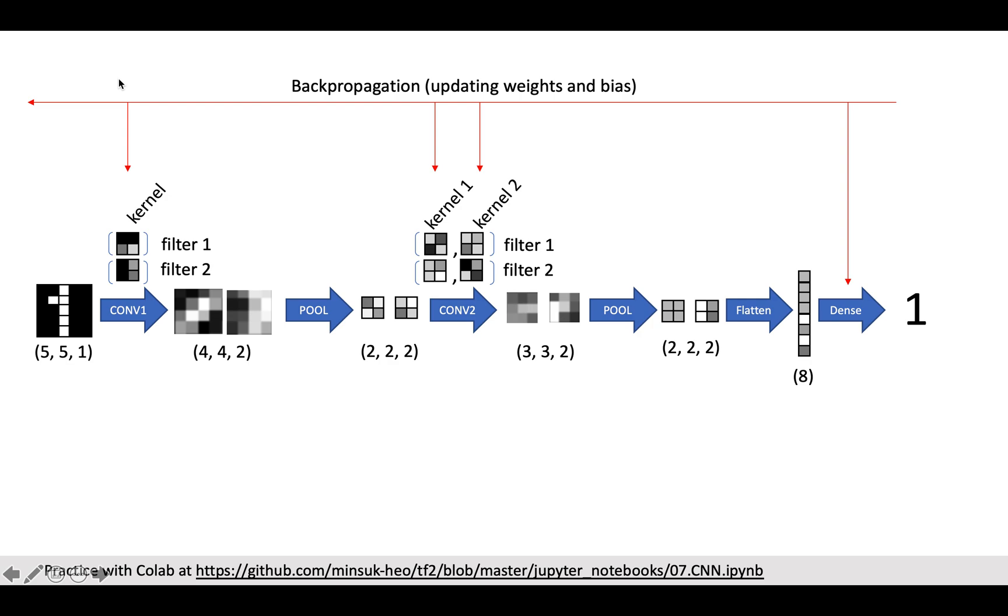And there will be backpropagation for updating weights and bias. Well, the initial value of filter is just random, so we don't know what kind of feature will be detected by the filters we made at the beginning point we make this deep learning model. In this backpropagation process, the filters will be trained as a vertical detector or horizontal detector.